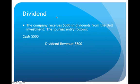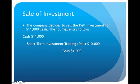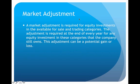The dividend journal entry is not affected by the trading classification. If we received five hundred dollars in dividends from Dell, we still debit Cash and credit Dividend Revenue — recorded the same way. If we decide to sell the trading investment, the sale is recorded similarly, with the only difference being that we use the Short-Term Investment Trading account title rather than Long-Term Investment Available-for-Sale.